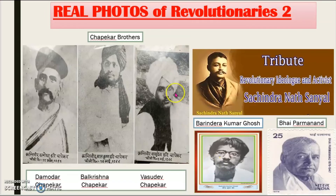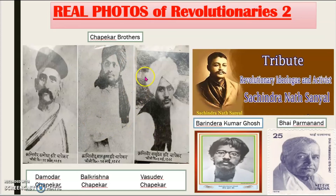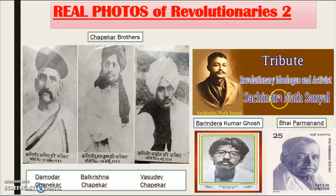Next we go to the real photos of the Chafekar brothers. This is Damodar Chafekar. This is Bal Krishna Chafekar. And this is Vasudev Chafekar — these three are the Chafekar brothers. Next we go to revolutionary ideology and activist Sachindranath Sanyal. Next we come to Barendra Kumar Ghosh. And next, Bhai Parmanand. All these names you have read in the lesson.